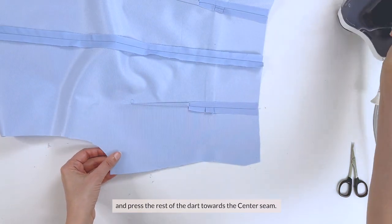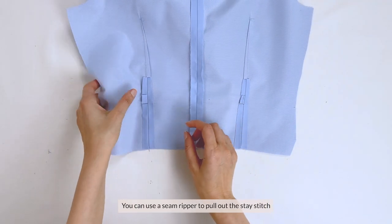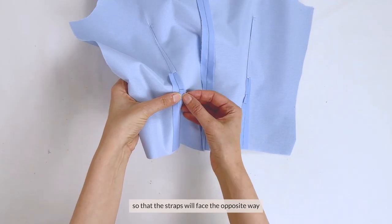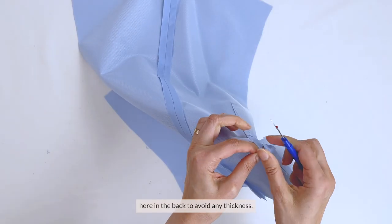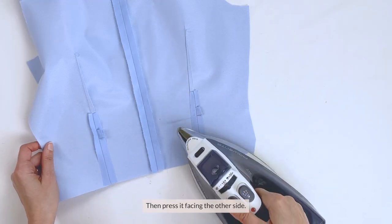Press the legs of the dart seam open, and press the rest of the dart towards the center seam. You can use a seam ripper to pull out the stay stitch, so that the straps will face the opposite way, here in the back, to avoid any thickness. Then press it facing to the other side.